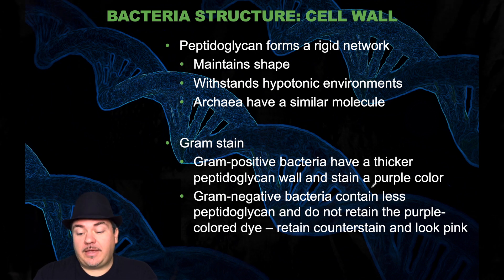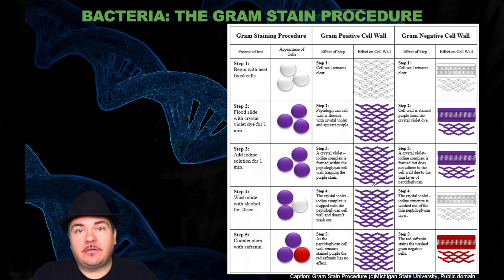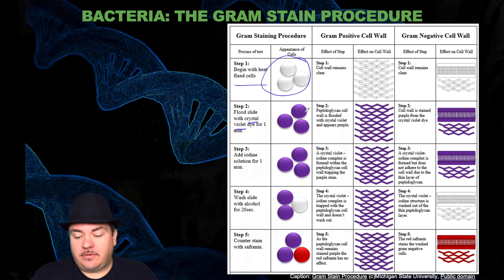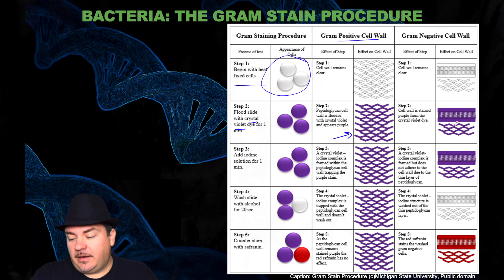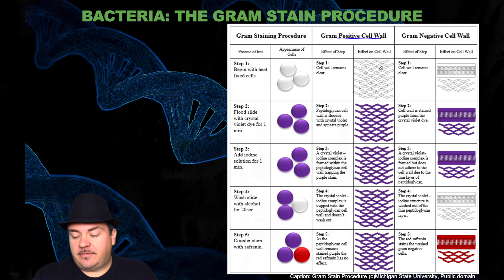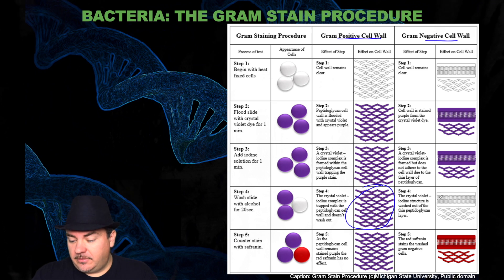Let's say you're working in a lab and you want to know whether cells are gram-positive or gram-negative. You take those cells and go through the gram-staining procedure, beginning by heat-fixing the cells. Then you stain the cells with crystal violet dye, so the cells all turn purple. That dye attaches to the peptidoglycan layer in gram-positive cells, and also stains the outer membrane and thin peptidoglycan layer in gram-negative cells. You then add iodine, and wash the slide with alcohol.